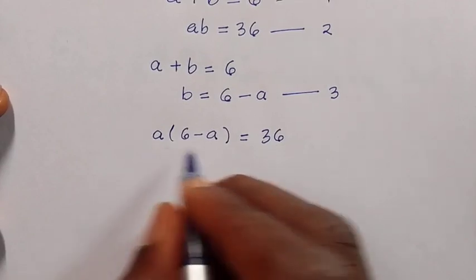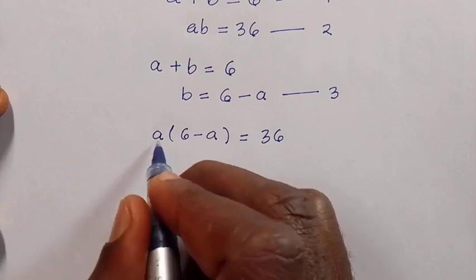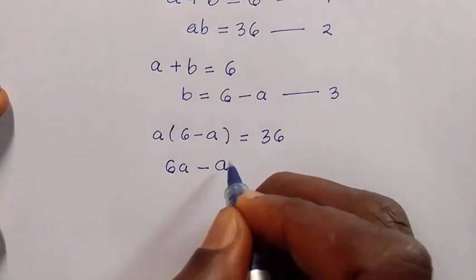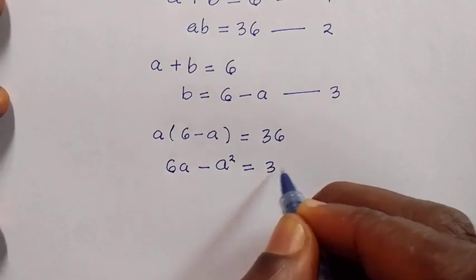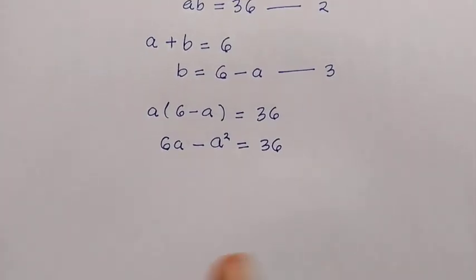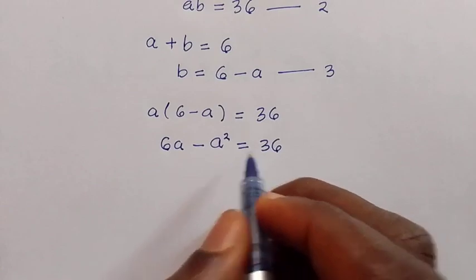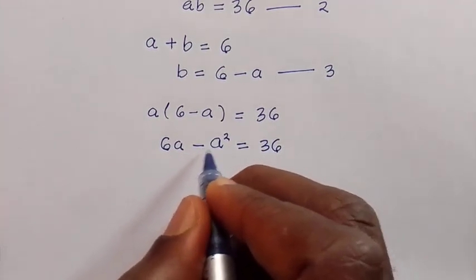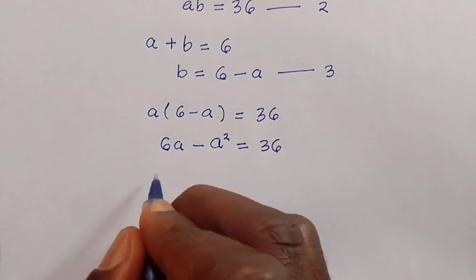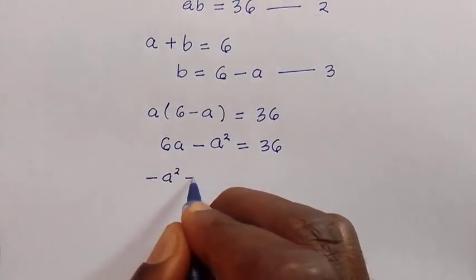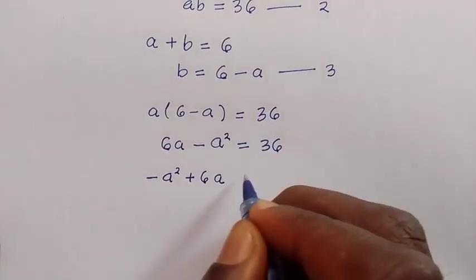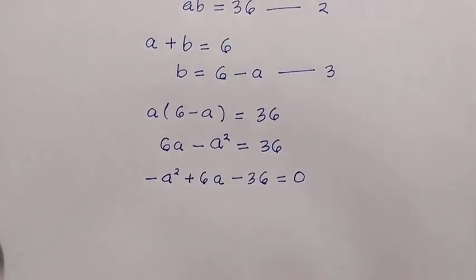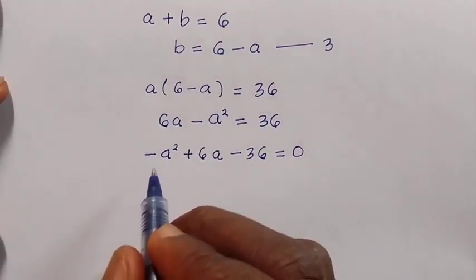By expanding the parentheses with a, we have a multiplied by 6 which gives us 6a, minus a multiplied by a which gives a squared, equals 36. This is a quadratic equation, so we rearrange it properly. We let minus a squared start the equation, so we have minus a squared plus 6a, then minus 36 equals zero.